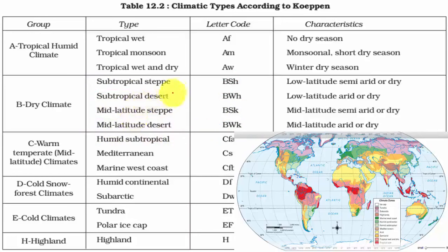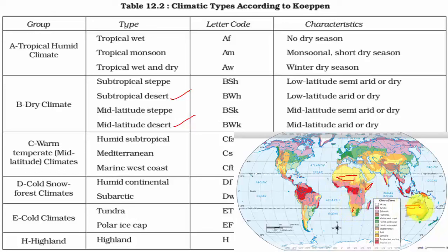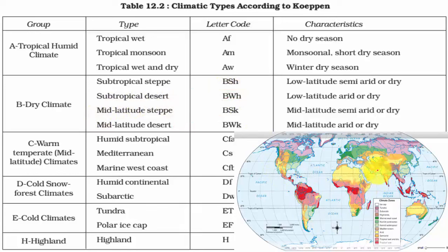We'll see the other two dry climate types — subtropical steppe and mid-latitude steppe — in the next video, as they are essentially grasslands. Coming to deserts, we have both subtropical and mid-latitude deserts. Subtropical deserts are found within the tropics: parts of the Sahara, Somali desert, Kalahari, Namib, the northern part of the Australian desert (also called the Great Sandy Desert), and the Atacama desert, which is BWH type. The Thar desert and parts of Saudi Arabia also fall under tropical deserts.